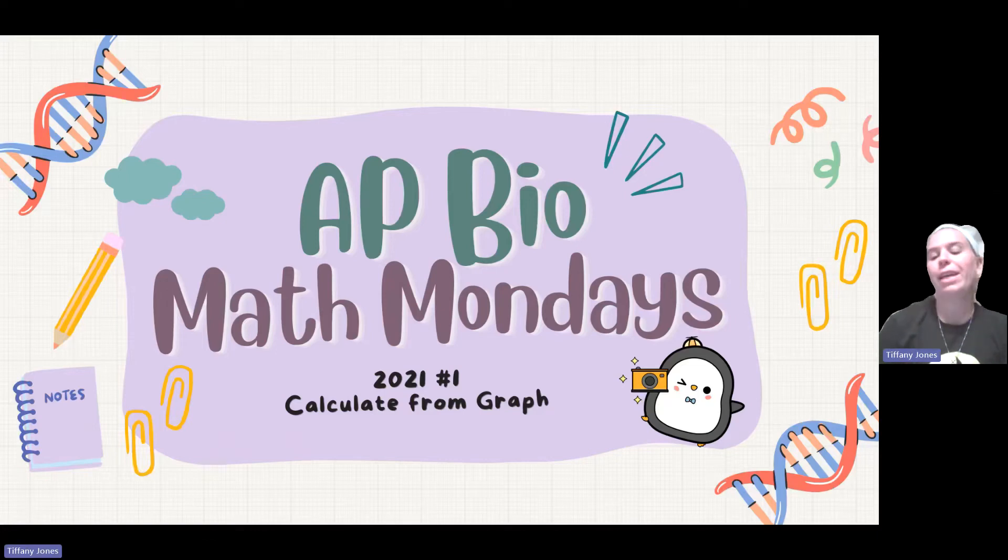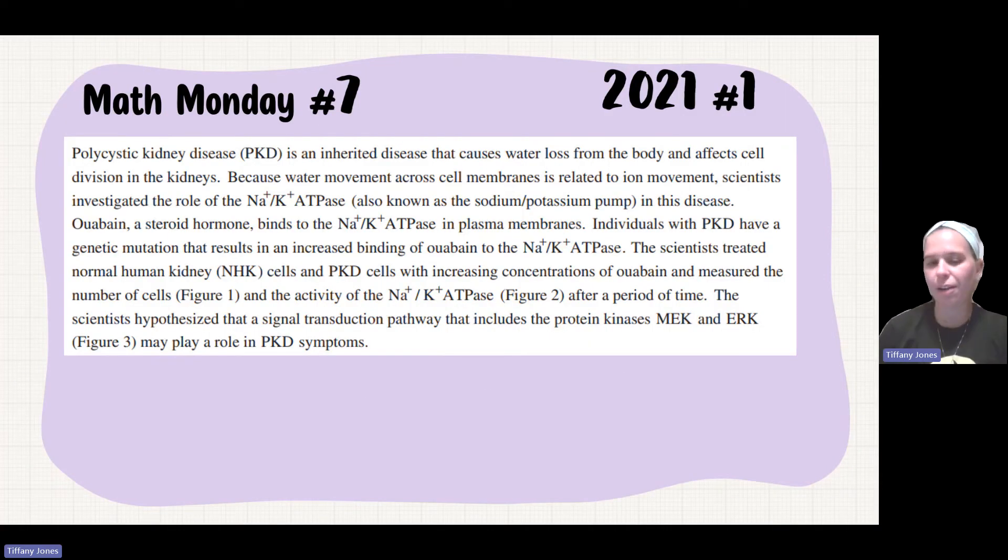What's up with the penguin? Today we do a little Math Monday looking at calculations from a graph. We use question number one from the 2021 exam. Now there's no actual formula for this one just because we're calculating from a graph.